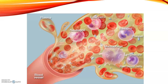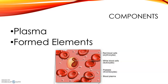Blood is a fluid connective tissue, and it contains plasma and the formed elements. The formed elements are the red and white blood cells and the platelets.